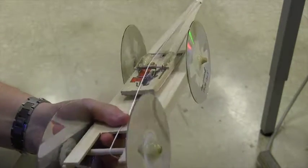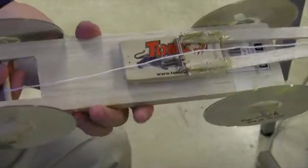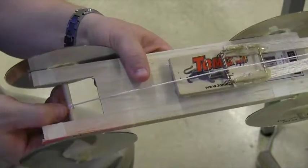We're going to take the string and wrap it around the back axle twice. Let's see, good. Good spot there. There you go. So twice around the back axle.